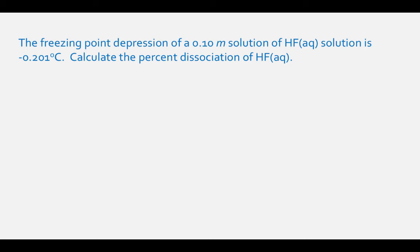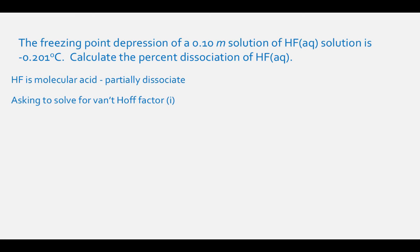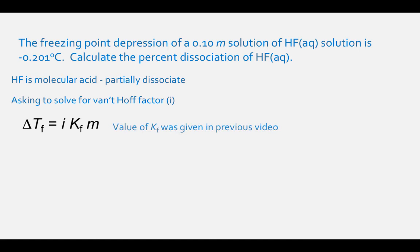The freezing point depression of a 0.10 molal aqueous HF solution is negative 0.201 degrees Celsius. Calculate the percent dissociation of HF. HF is a molecular acid, which means it will partially dissociate in water. This question asks us to find the Van't Hoff factor for this acid. The equation is: change in freezing point equals the Van't Hoff factor times the molality times Kf. The Kf for water is 1.86 degrees Celsius per molal.